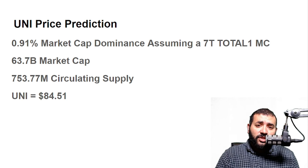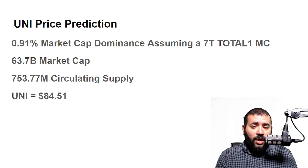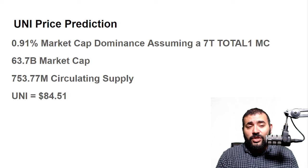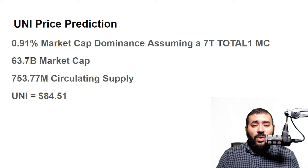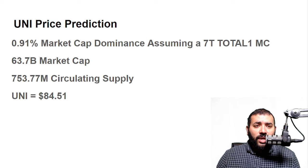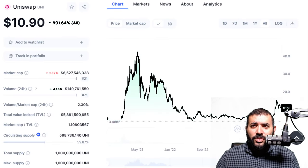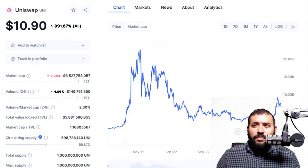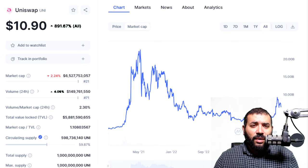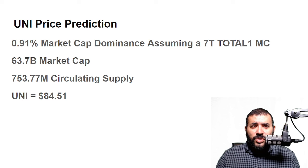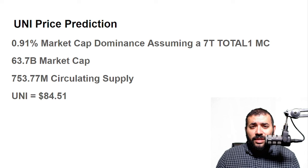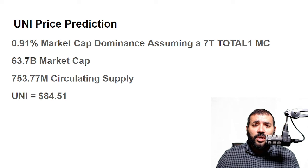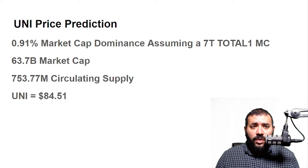Now if CoinMarketCap's circulating supply figure is correct, that gives us a little bit more than $100 for Uniswap. To clarify — the all-time high price was a little over $40, and the market cap all-time high is over $20 billion. So projecting to a $63.7 billion market cap is a pretty significant increase, and you can see that reflected in the $84.51 price target — that's more than double its 2021 peak. For a cryptocurrency this large, that's not insignificant.